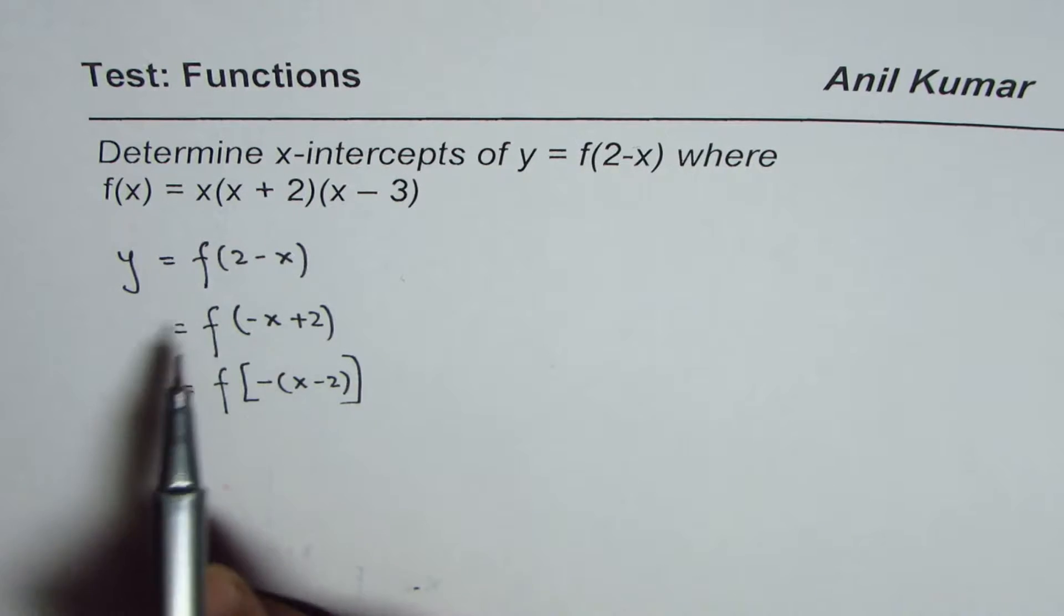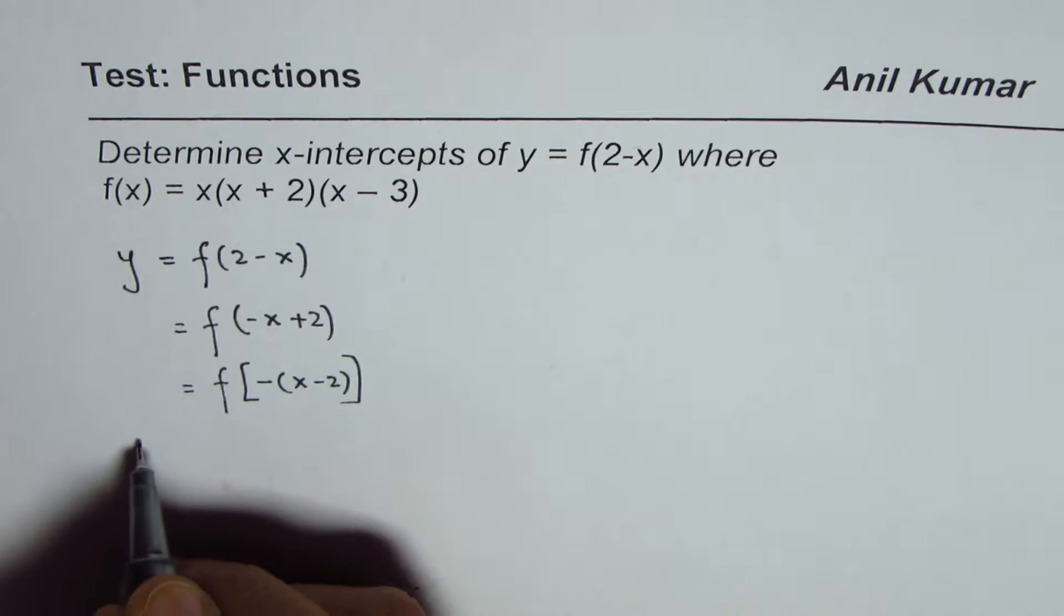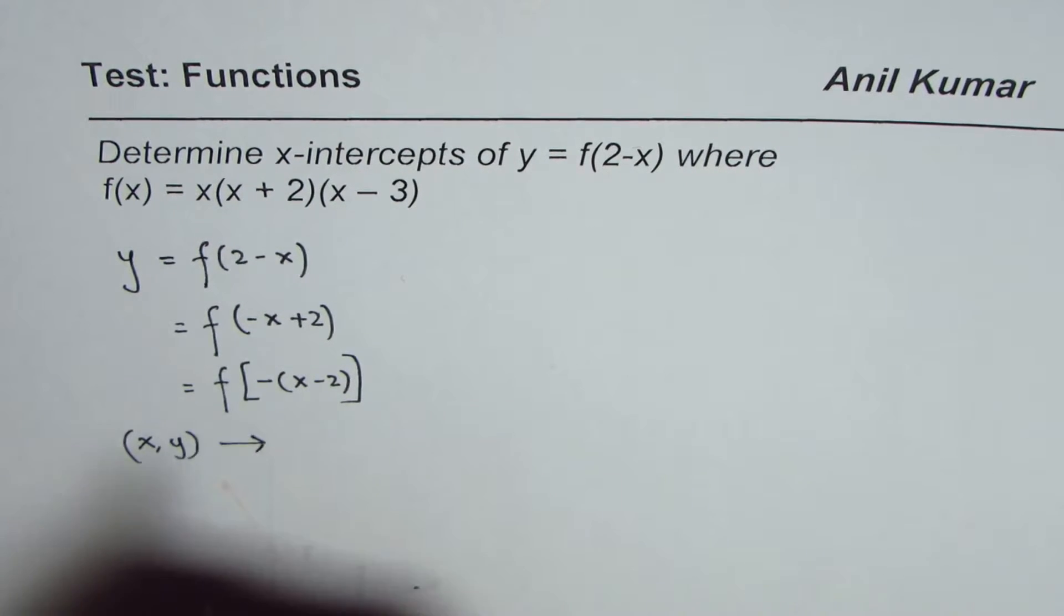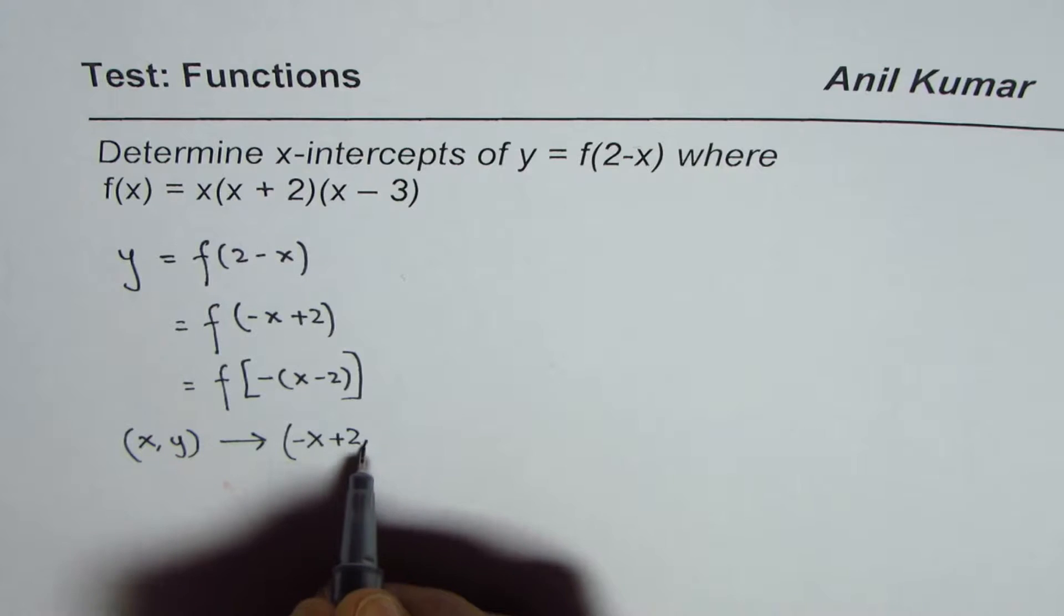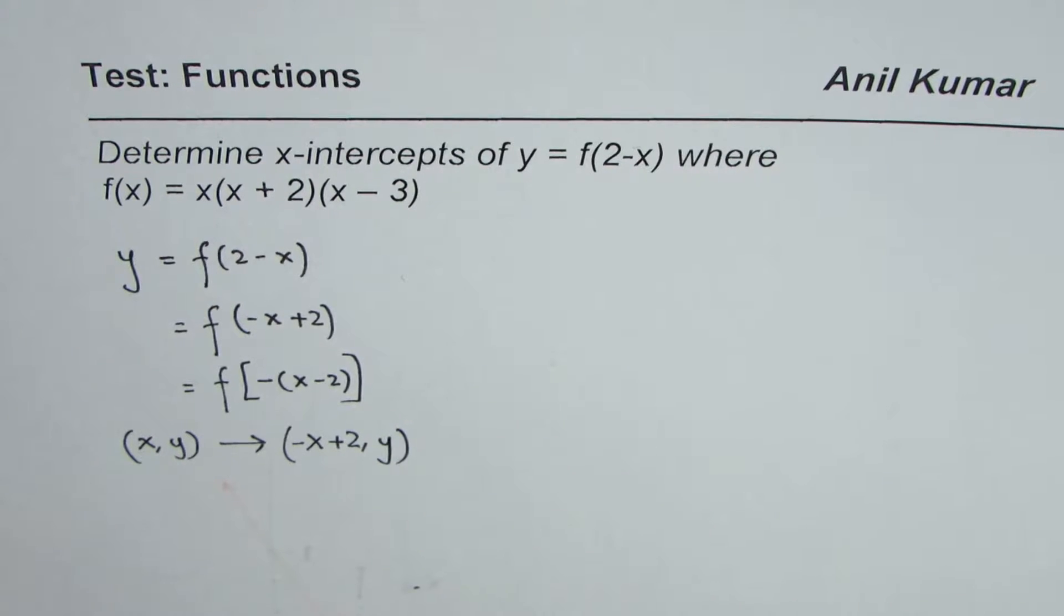So with this transformation, the points, let's say x, y, will actually get transformed, and x values will be negative of x and plus 2, y values will remain same.